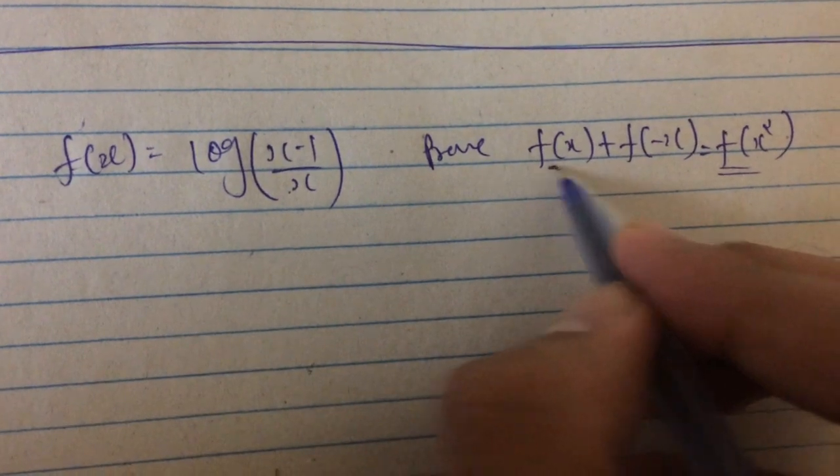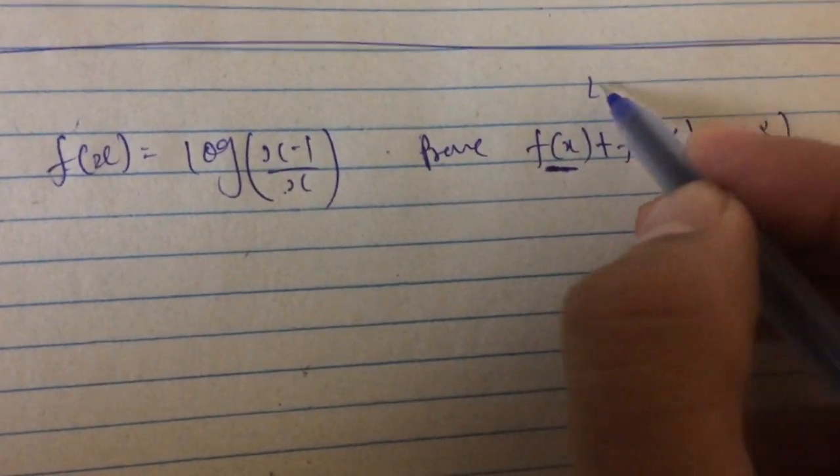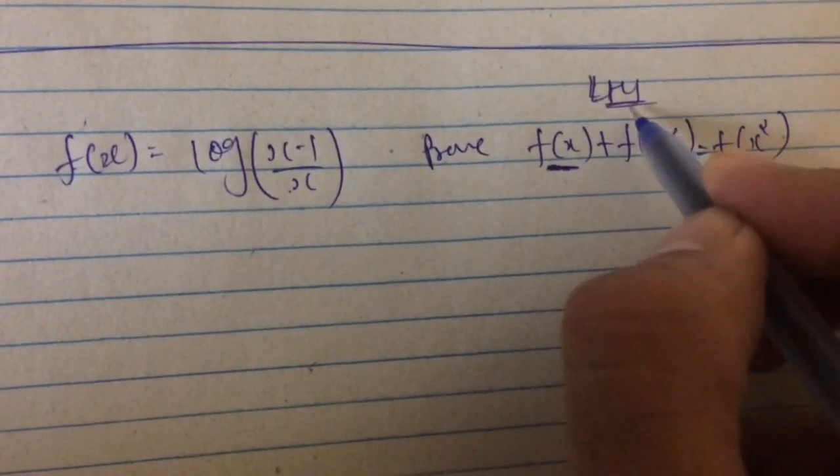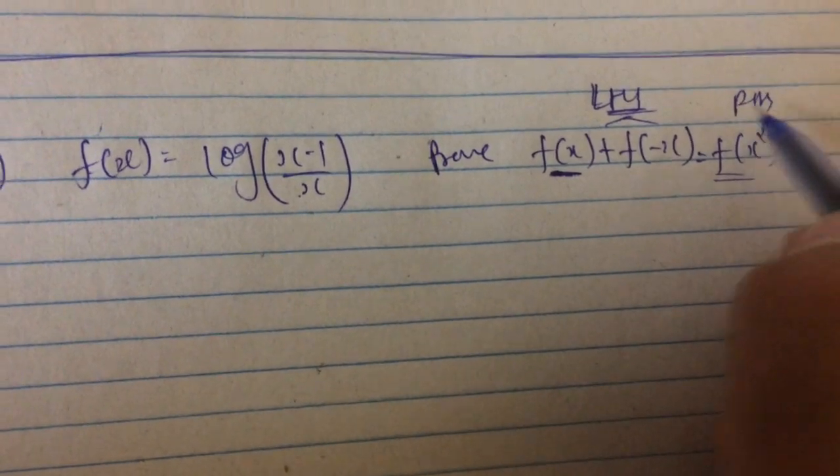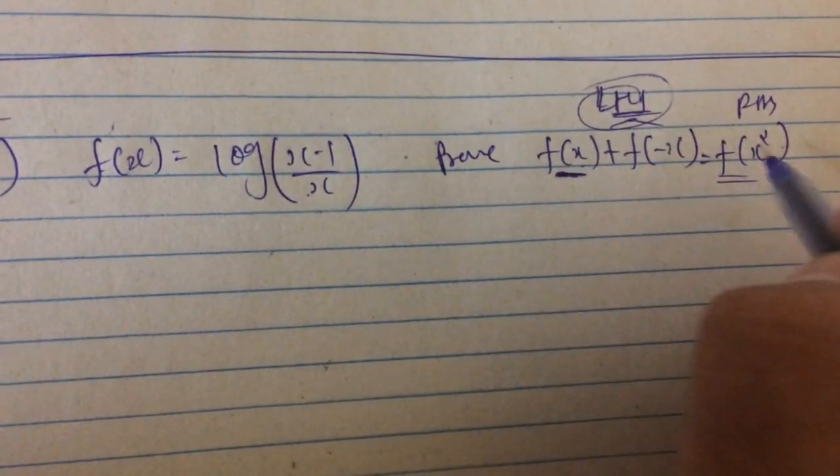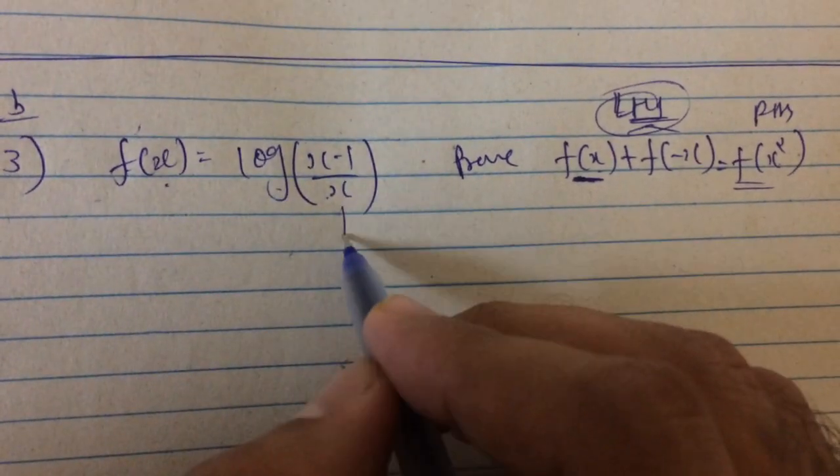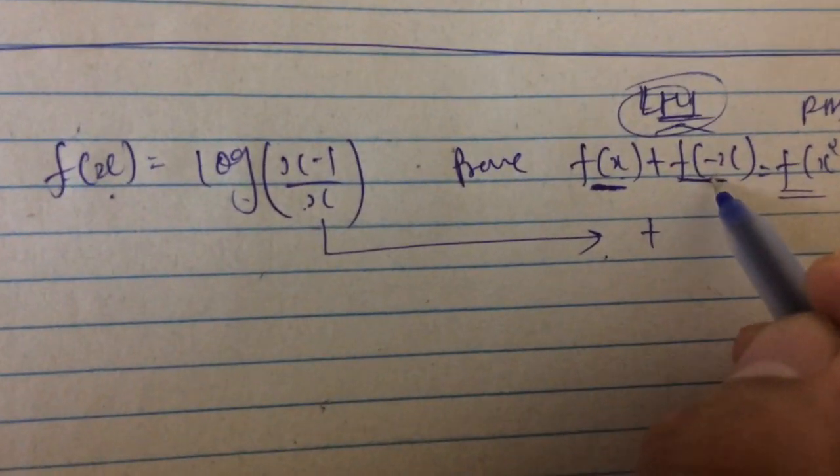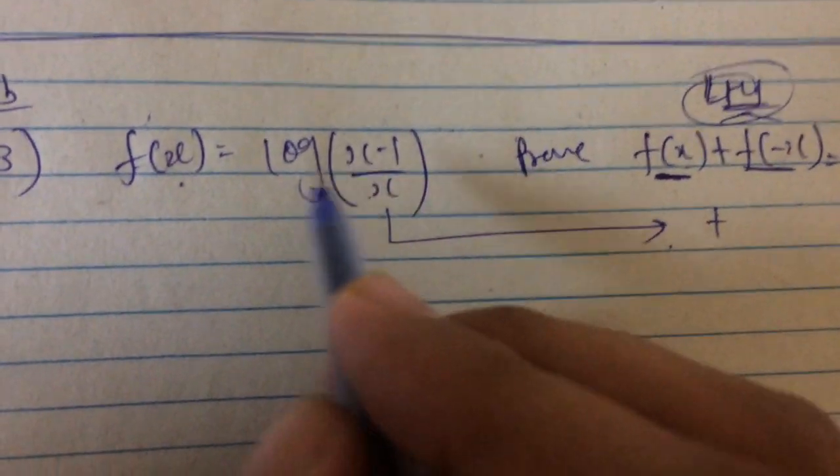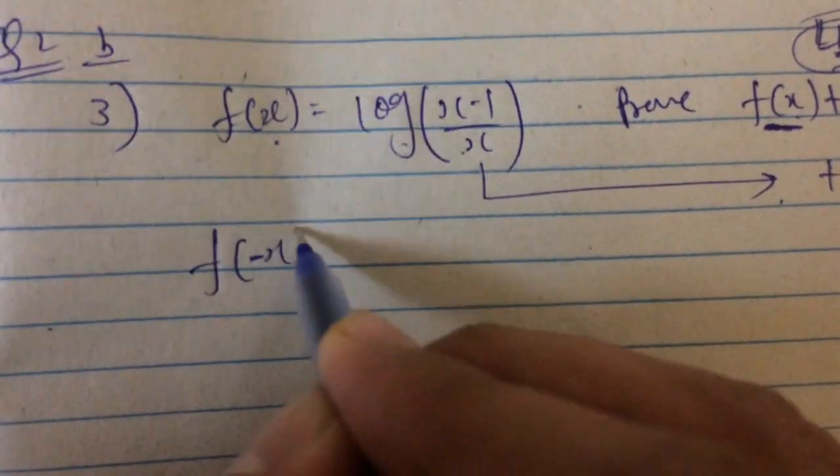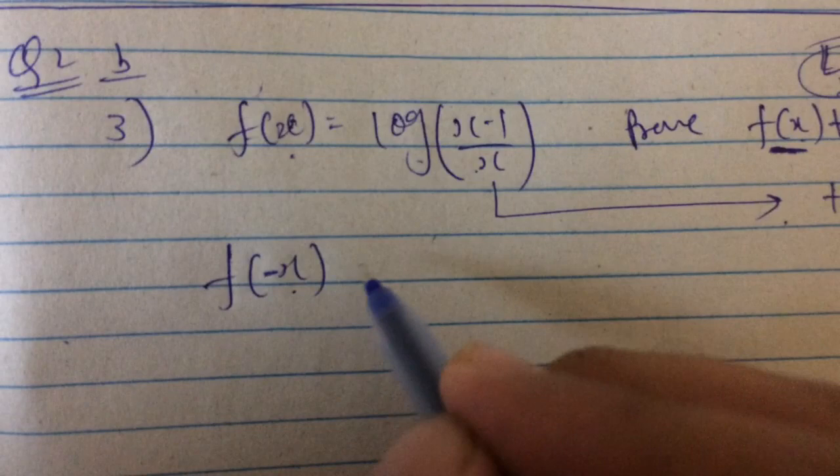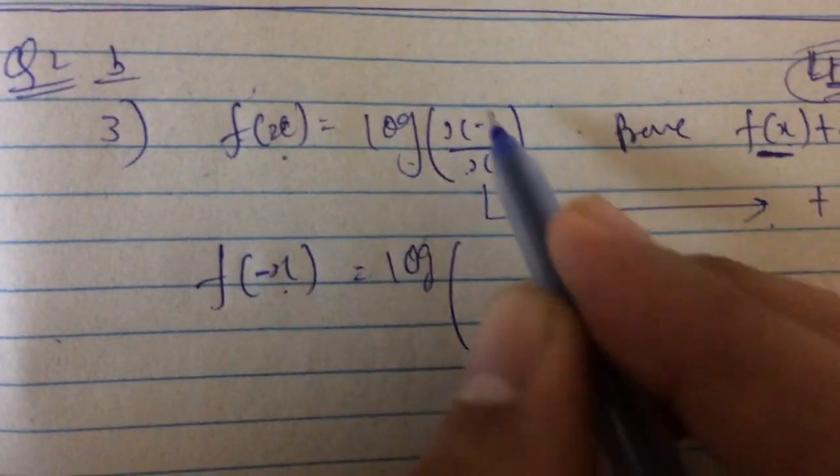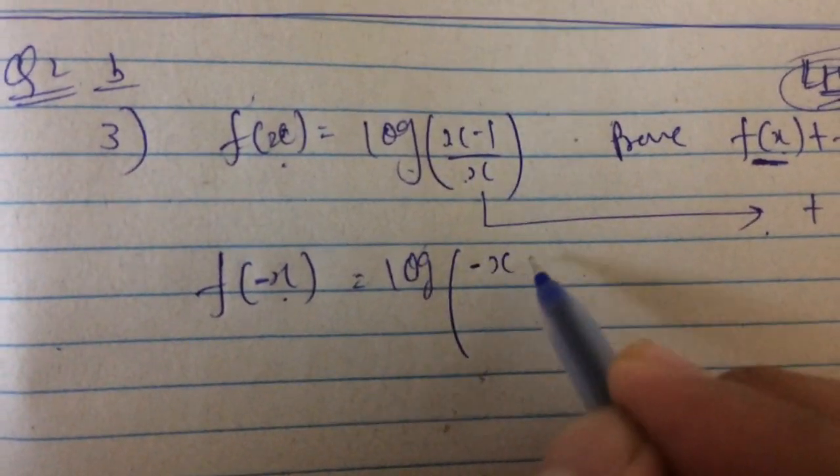So here f(x) value is on our LHS side and here on the RHS side we want to prove LHS to RHS. So f(x) value is already given, plus what is f(-x)? That is nothing but replace all x with -x, so all x becomes -x.